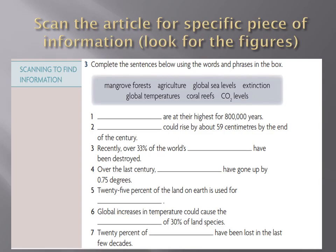Scan the article for specific pieces of information. Scanning means looking quickly — glancing with your eyes around the article to find a specific piece of information. Most of the sentences from 1 to 7 contain a figure, a number. Glance through the text searching for that figure, then read the sentence that includes it and you'll be able to complete sentences 1 to 7. Try to do it as quickly as you can — that's what scanning is all about: finding information quickly.